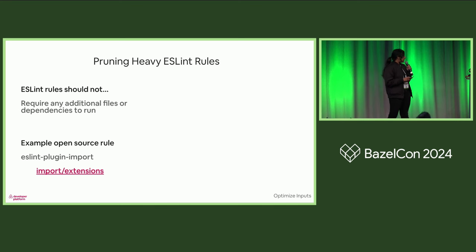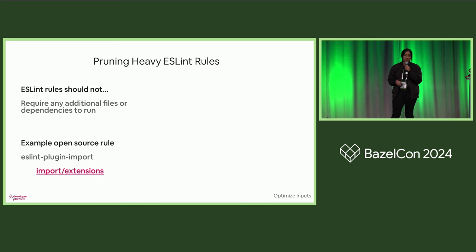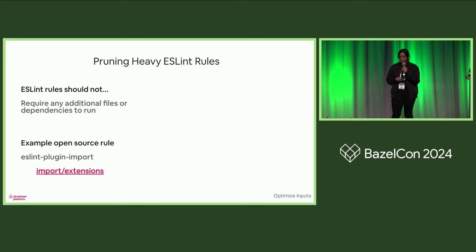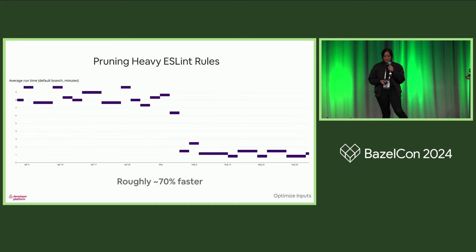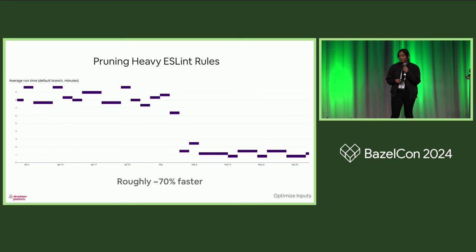This is an example of an open source one — the open source ones usually come from eslint-plugin-import. The import-extensions rule is kind of silly because we were using it solely to prevent JavaScript and TypeScript file extensions in our import statements. This rule would actually check whether the file existed on disk before making that validation. We replaced it with a static check, and it was much faster. Our lint target now just contains your linter, the configuration files you need, and any JavaScript or TypeScript files in scope. We no longer lint any downstream dependencies — only direct deps. This resulted in a roughly 70% speedup: from about 8 to 10 minutes down to about 1 to 2.5 minutes on average.